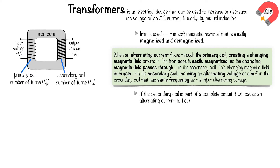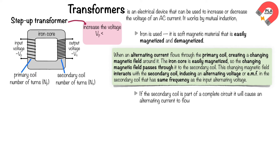There are two types of transformers: step-up and step-down transformers. A step-up transformer increases the voltage of an input power supply, meaning Vp is less than Vs, and the number of turns on the primary coil is less than the number of turns on the secondary coil.